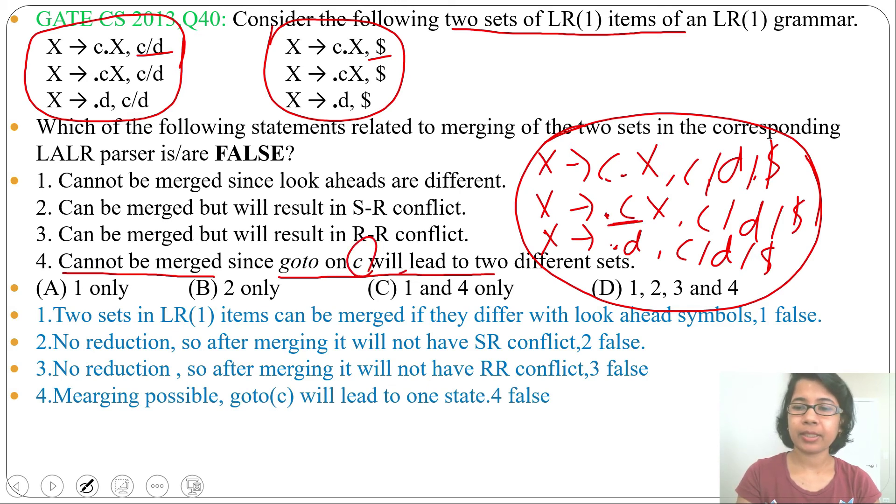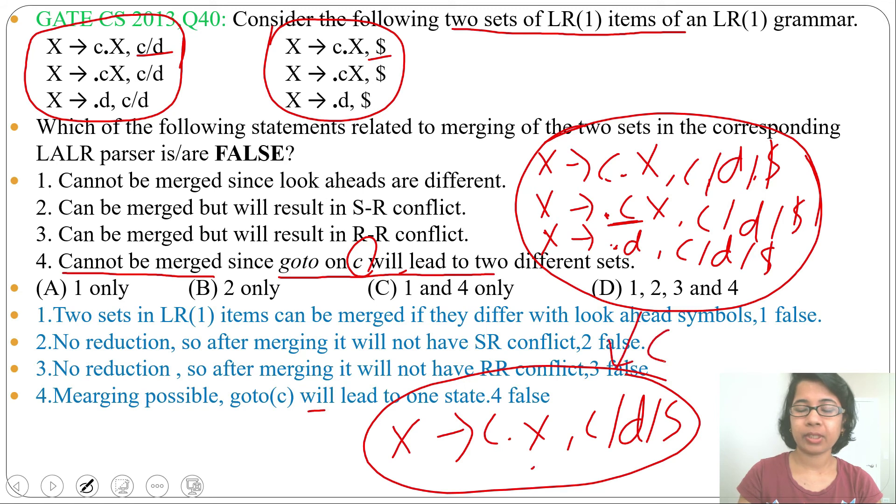By c, it will go to another state where dot will be after this c. The production will be X derives c dot X with lookahead c, d, or dollar. There is just one set. By c, it is going to this set.